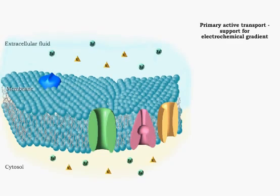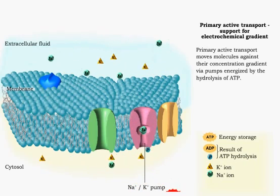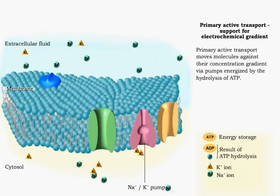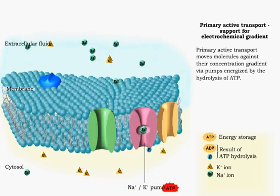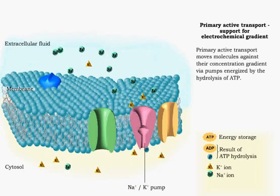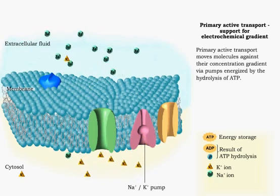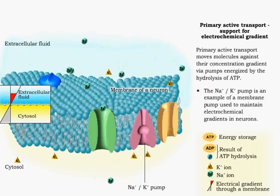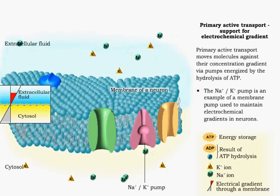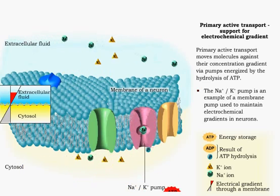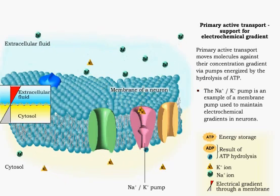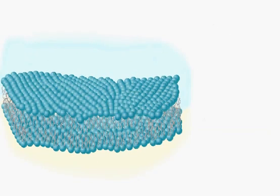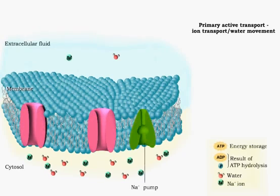Primary active transport of charged or polar solutes requires membrane protein pumps that use energy supplied by the hydrolysis of ATP. This causes a conformational change, moving the molecule up its concentration gradient. The sodium-potassium pump is an example of a pump used to maintain electrochemical gradients in neurons. Actively transporting ions is the major way the cell has of maintaining water balance.